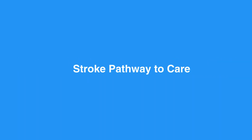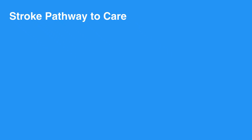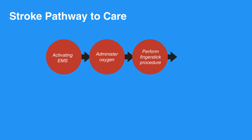To care for an individual with a stroke, proceed with this pathway. Start with activating EMS. Administer oxygen using 4 liters per minute of nasal cannula, and titrate as needed to keep oxygen saturation at 94% to 99%. Perform a finger stick procedure to check glucose, as hypoglycemia can mimic acute stroke.